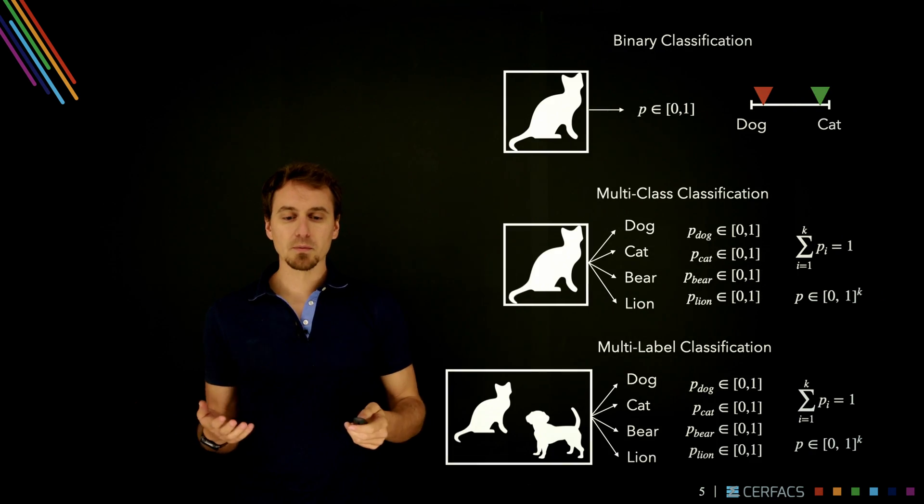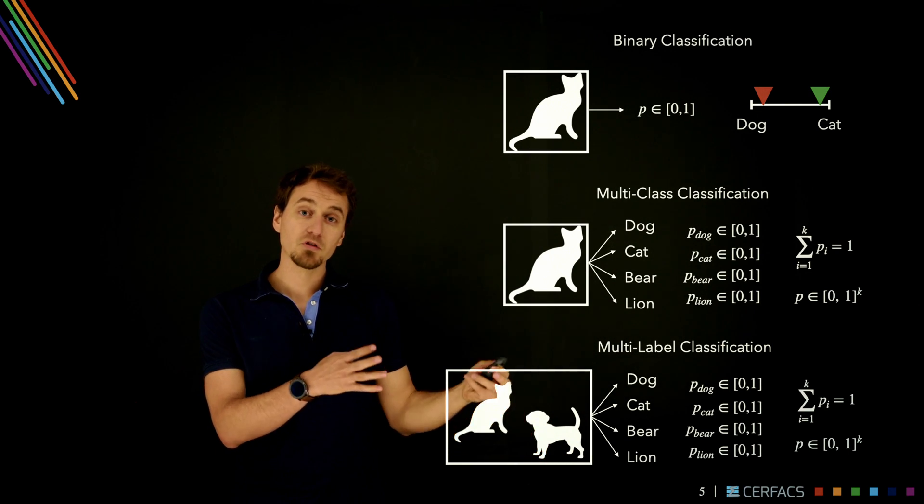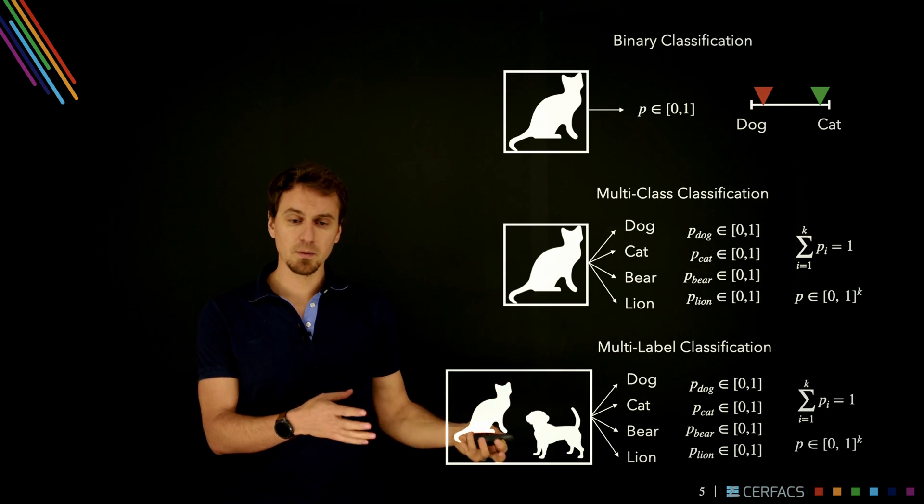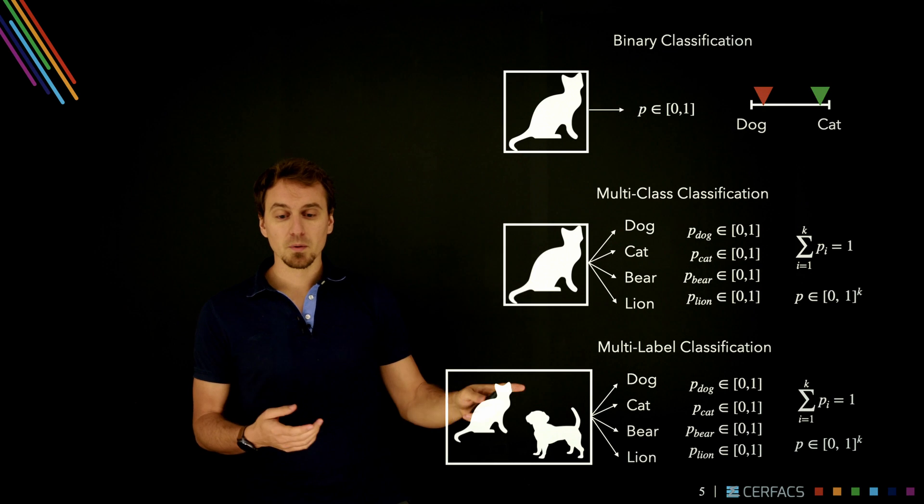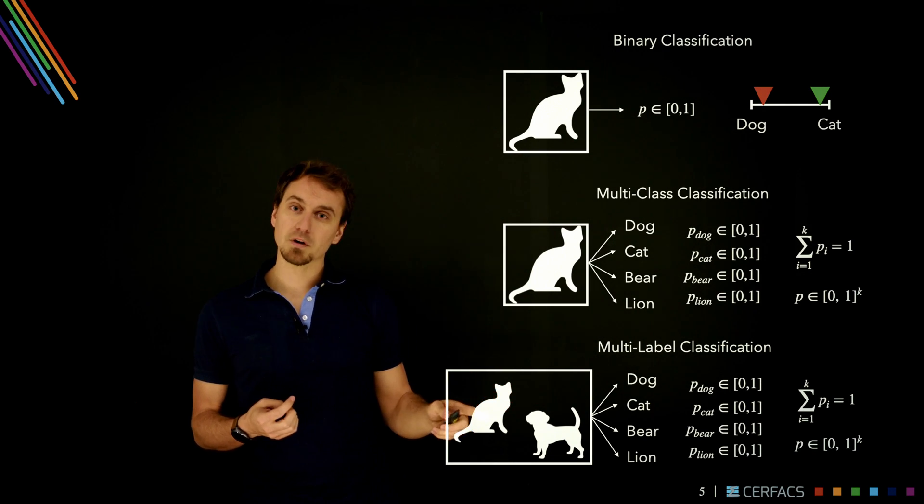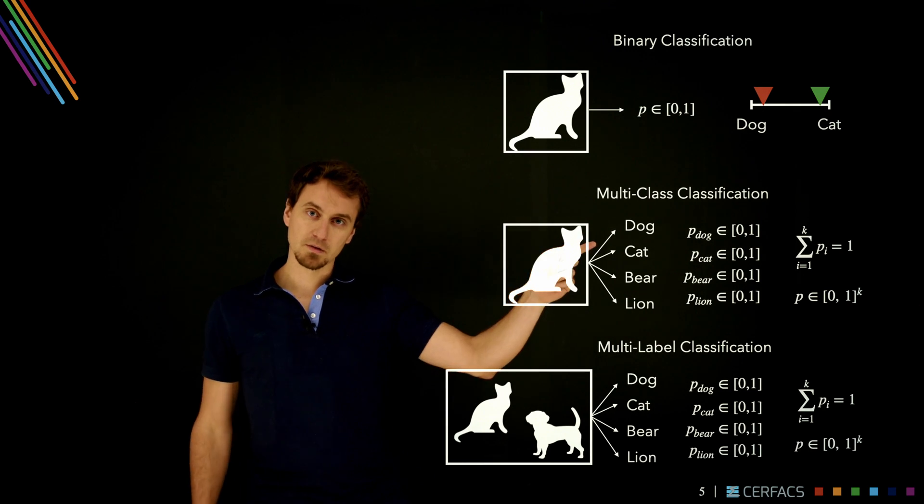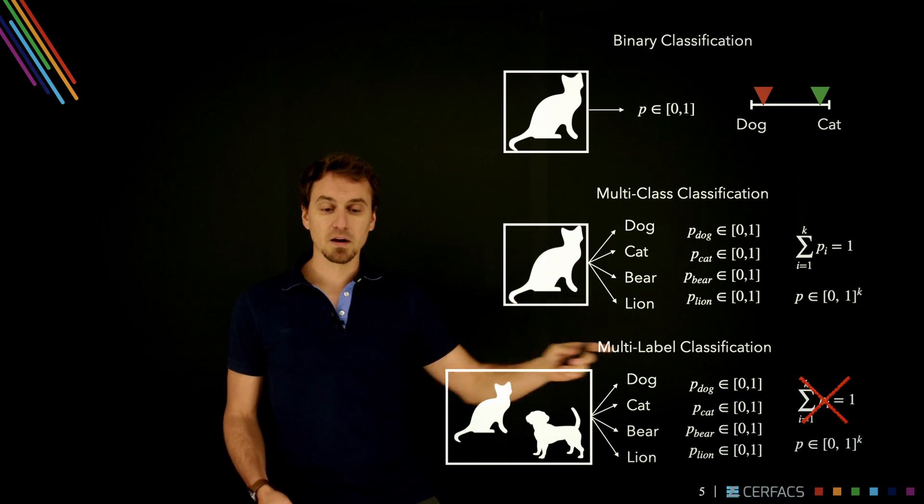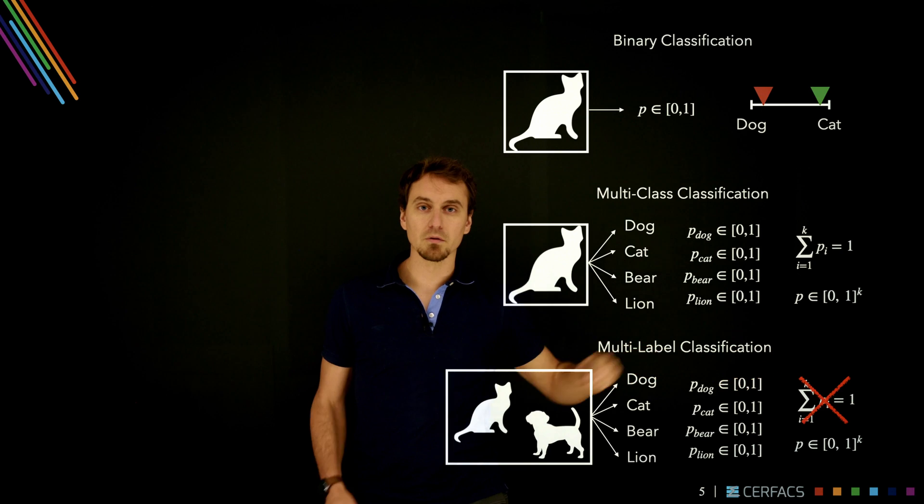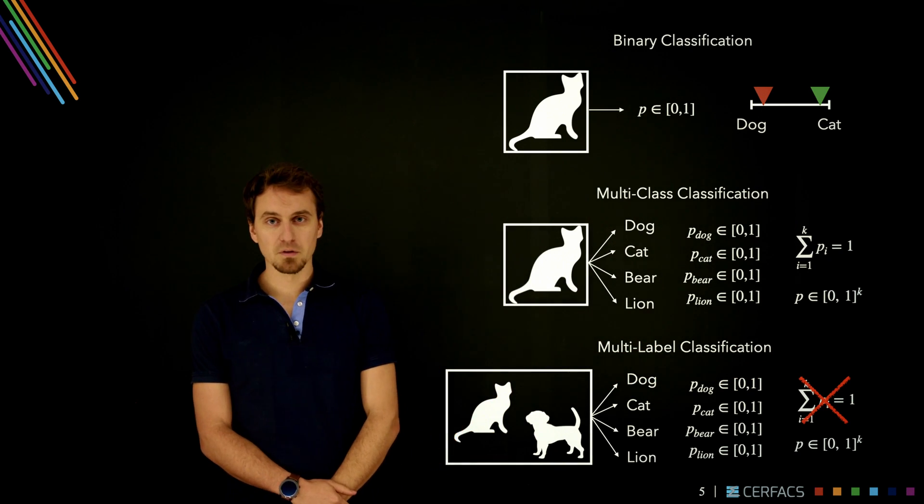But you also have problems where you can have more complex images in which several classes can appear in the same image. In this case, we would like to say it's both 1 for cat and 1 for dog. So this is very similar to multi-class classification. The only difference is that you relax this constraint. You don't sum everything up to 1.